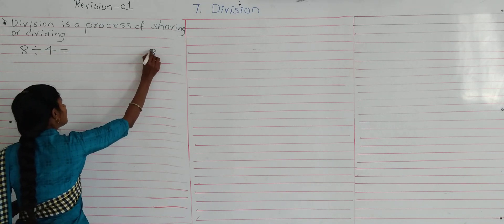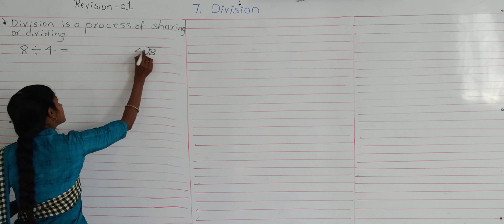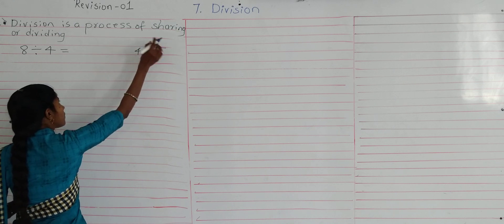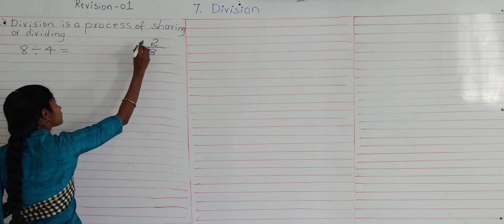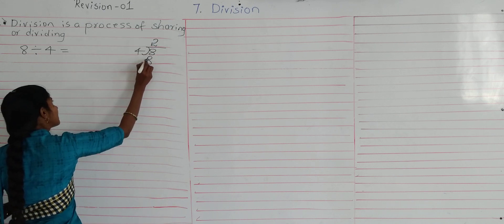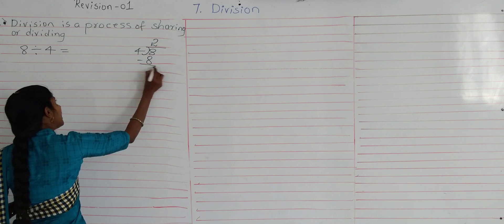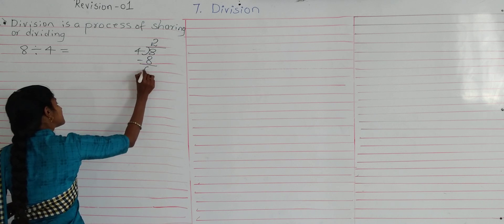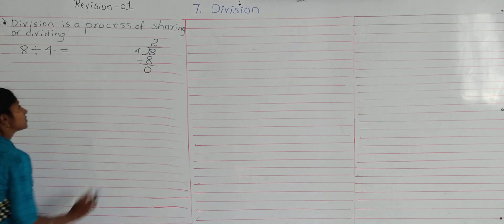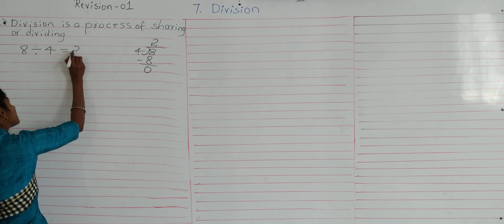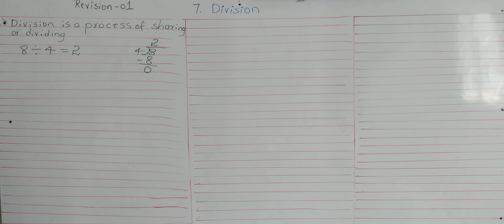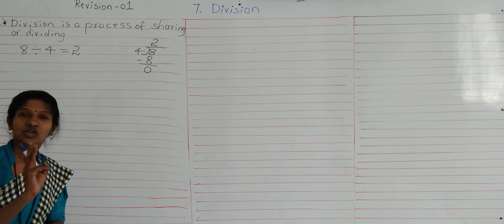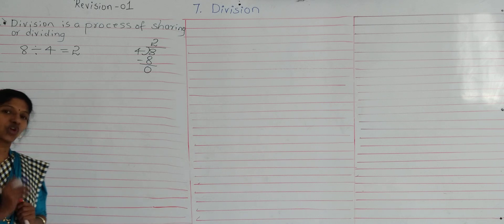So if we write this in a digital form: 8 divided by 4. So 4 ones are 4, 4 twos are 8. So 2 times 4 is equal to 8. Write 2 above 8 under the dividend, then subtract. 8 minus 8 is 0. So the quotient is 2. So 8 divided by 4 is equal to 2. Each friend will get 2 toffees or 2 chocolates.